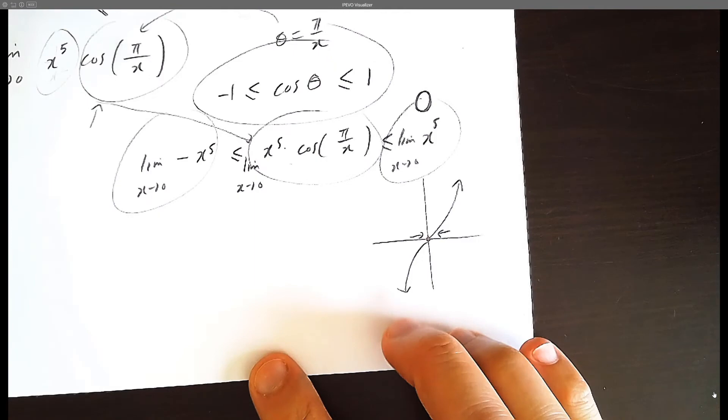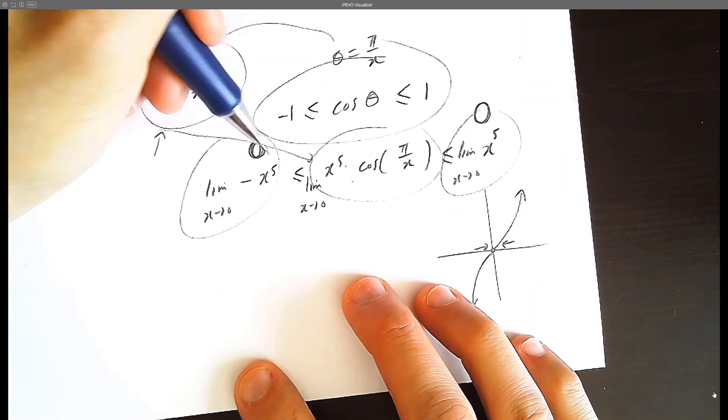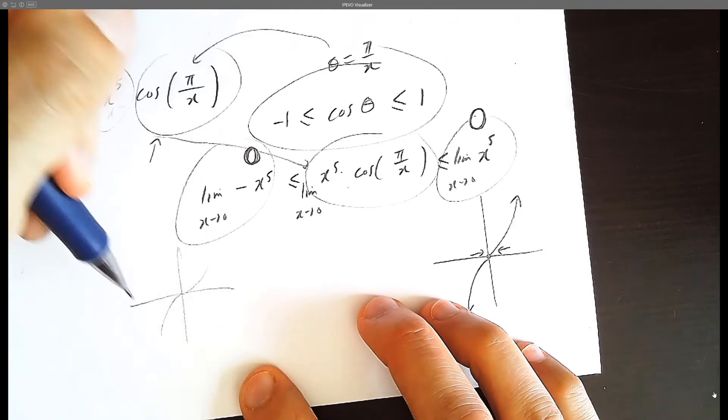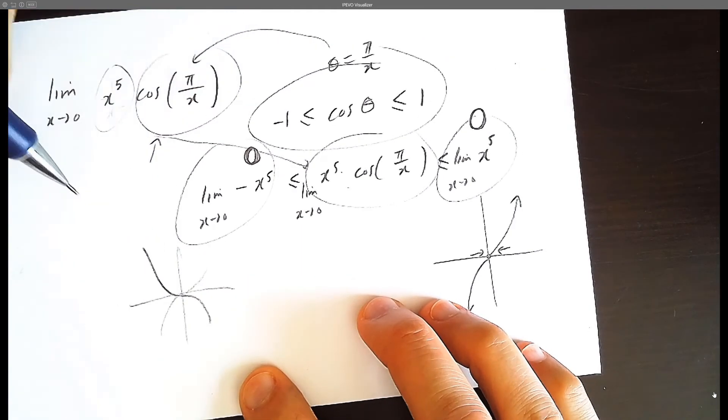So if this right inequality is 0, and this left inequality, this left part here is 0 as well, negative x to the 5 would be flipped. Instead of going up like that, it would be flipped this way. It's also 0.